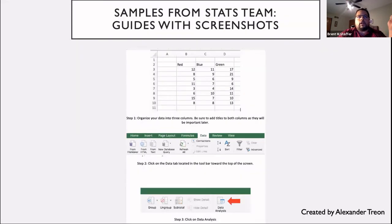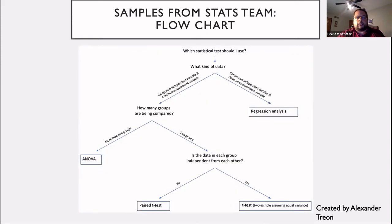Some ATAs, including Alexander Treon, worked on creating worksheets with step-by-step screenshots of how to conduct different statistical analyses. We now have those in our digital lab manual as a resource for students who prefer to follow along at their own pace rather than watch a video. A different semester, Xander Treon also worked on a flow chart to help students decide which type of stats test to run based on the type of data they're given — a resource available on their table and on Canvas.